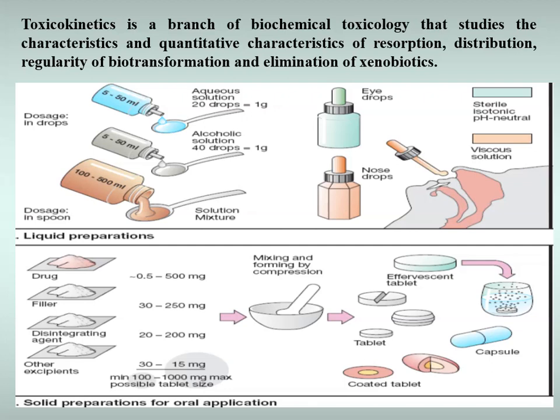Dosage of toxic substances is expressed in mass (grams, milligrams, micrograms), volume (milliliters, drops), as well as universal biological activity. LD50 is used for comparative assessment of toxicity — this is the average dose that kills 50% of experimental animals within 3 days of entering the body through the stomach, intestines, or skin. In some cases, experimental animals are observed for 14 days to determine LD50. LD50 is expressed in milligrams of substance per kilogram of animal weight. Toxicity of gaseous substances is expressed in terms of concentration, not dose.